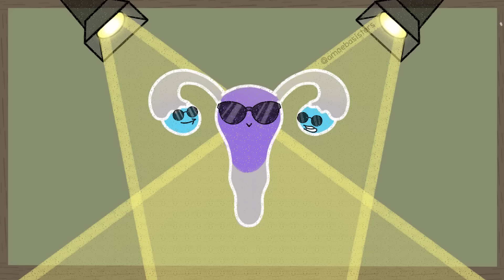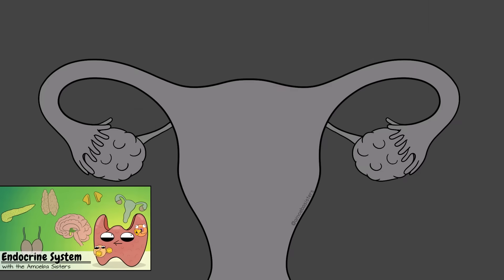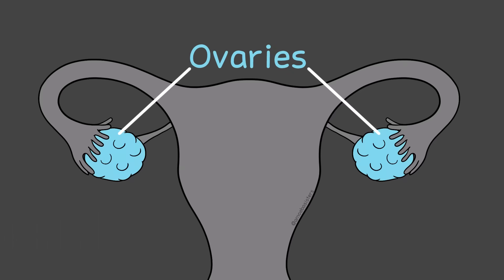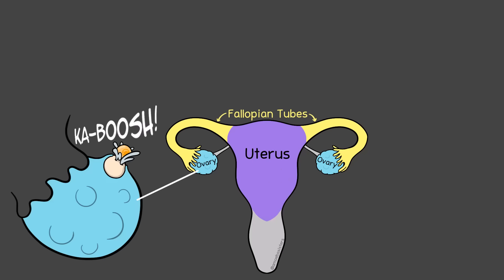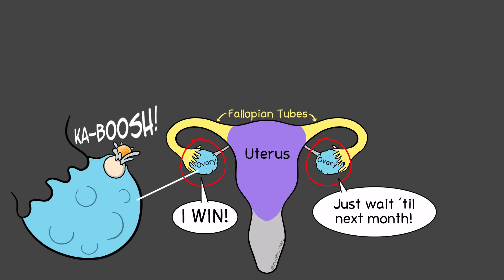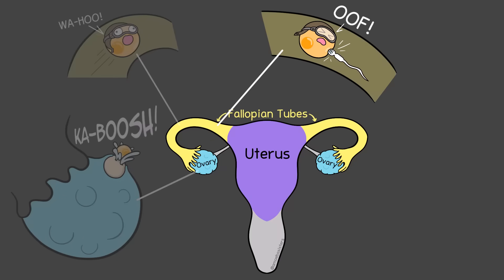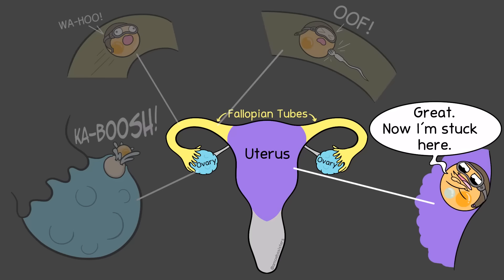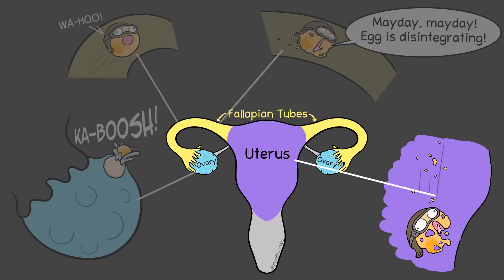And it is the two of them that are the focus of this video. Let's intro some major structures involved. In our endocrine system video, when we mentioned the female reproductive system, we showed the ovaries. Not technically connected to the ovaries, but very close, are fallopian tubes, and they lead to the uterus. An ovary releases an egg — there are two ovaries, but generally only one will release one egg each month. The egg travels through the fallopian tube. If sperm is present, the egg can get fertilized in the fallopian tube, and the egg already starts some cell divisions on its way to implant in the lining of the uterus, where it can continue to develop. If the egg is not fertilized in the fallopian tube, it starts breaking down and cannot get implanted in the uterus.